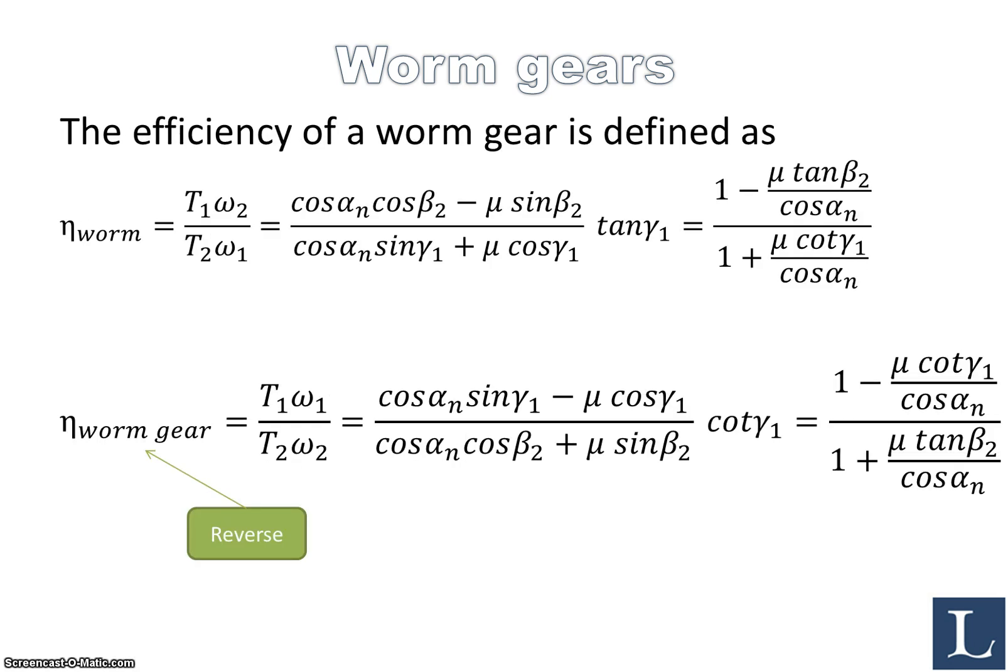Now the efficiency we define as the torque times the angular velocity omega_2, so we have T1*omega_2/(T2*omega_1). This can then be rewritten using the equations and the schematic shown in the previous slide into an expression which can be also simplified further down to (1 - mu*tan(beta_2)/cos(alpha_n)) divided by (1 + mu*cot(gamma)/cos(alpha_n)), and this is in the case when the worm is driving.